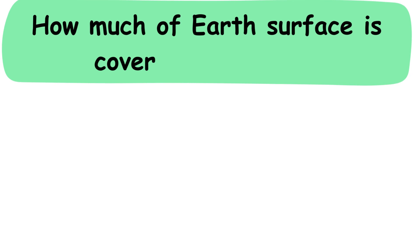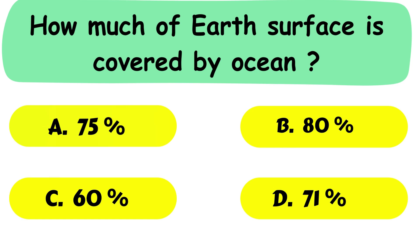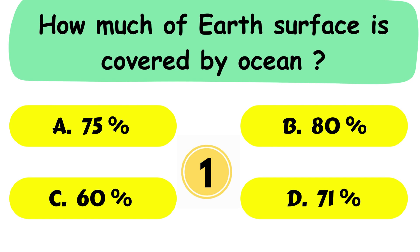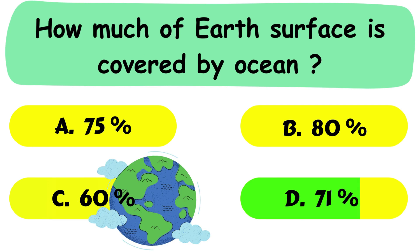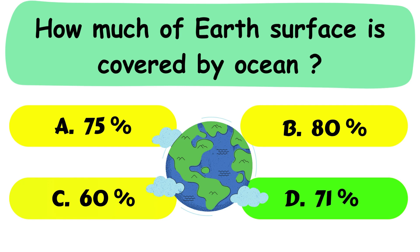Question No. 33. How much of Earth's surface is covered by ocean? A. 75%. B. 80%. C. 60% or D. 71%. The correct answer is option D. 71%.